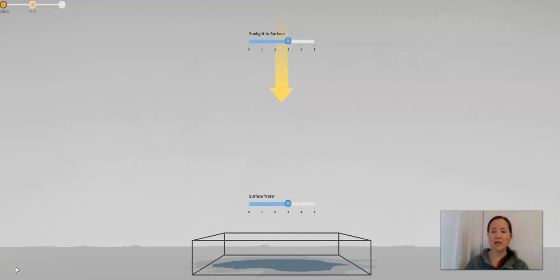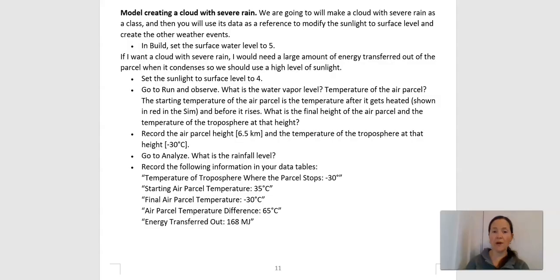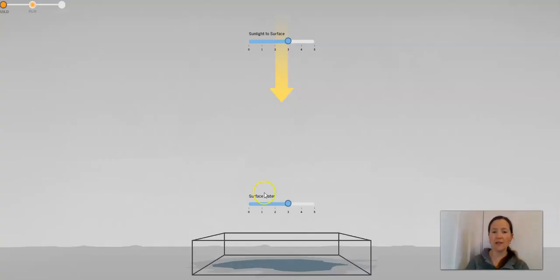I'm in the sim in the setting that allows me to adjust the sunlight to surface and the surface water. I'm going to check with the packet: we're setting our surface water level to 5 and our sunlight to level 4. Sunlight to level 4 — I can slide this over — and our surface water to level 5. And then we're going to run.